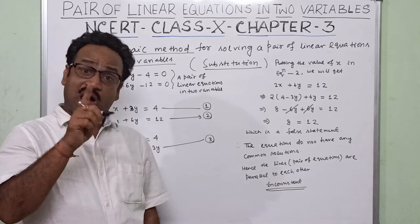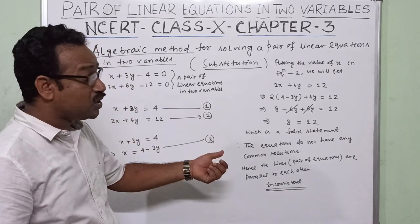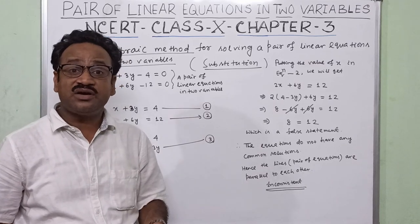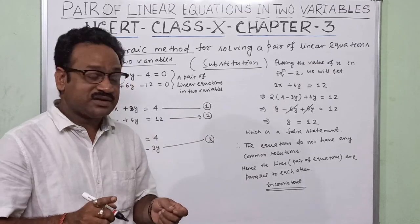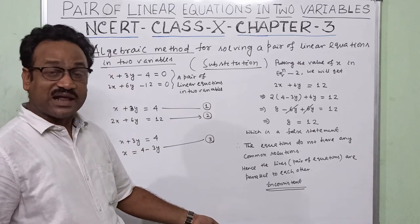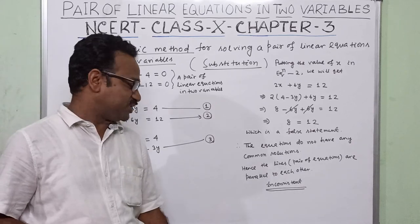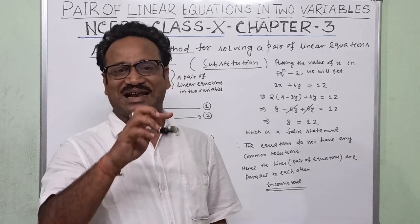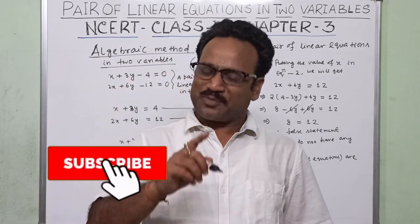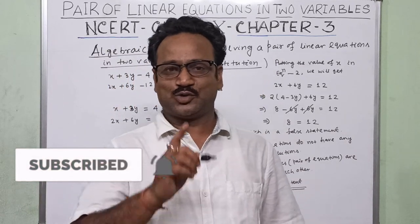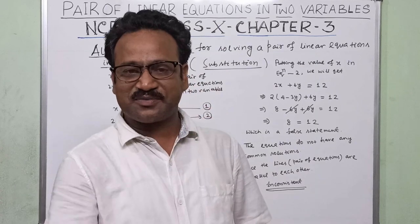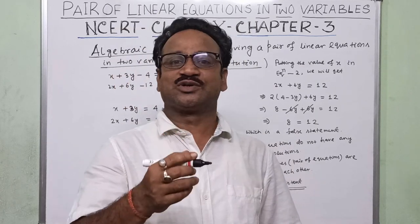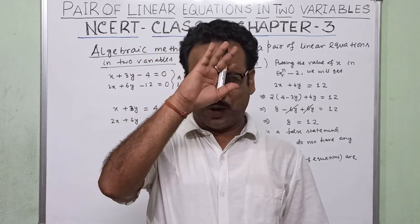Hence the lines are parallel to each other — inconsistent. You can also verify this on a graph sheet. I have already explained in my previous videos how to determine whether lines are parallel, intersecting, or coincident. Thanks for watching. If you haven't subscribed to my channel yet, please subscribe so you can get new conceptual videos in the future. Thank you.